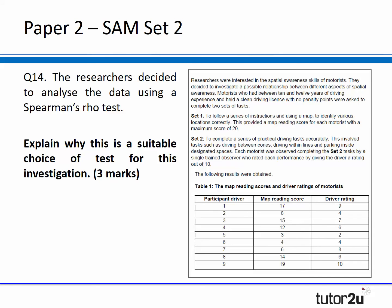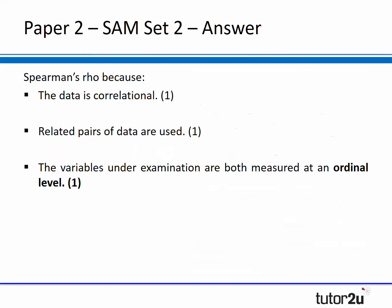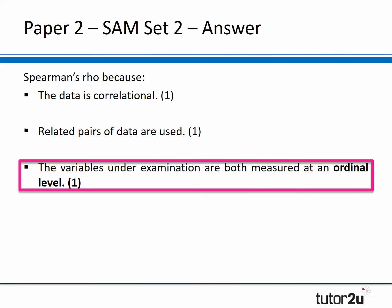If we look at the second set of sample assessment materials, question 14, the question says the researcher decided to analyse the data using a Spearman's Rho test - explain why this is a suitable choice of test for this investigation, worth three marks. Again, going to the mark scheme, students explicitly need to know that this is an ordinal level of data being measured in that particular test - and that is worth a mark. So in order to answer that question, they need levels of data, levels of measurement.